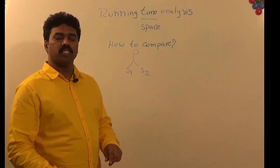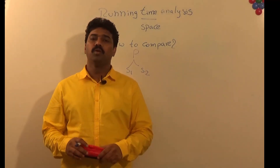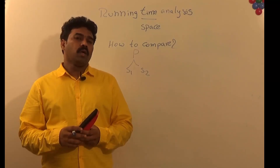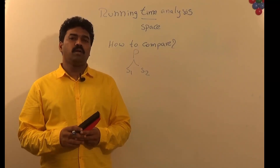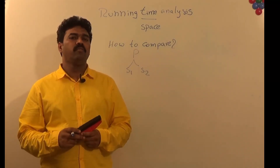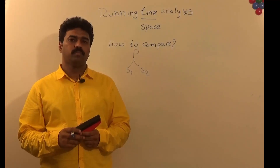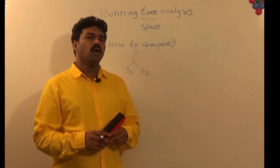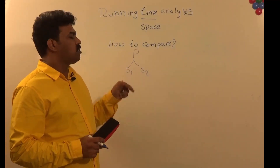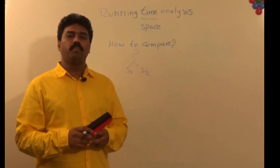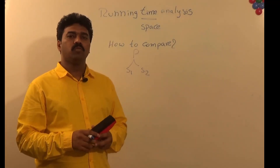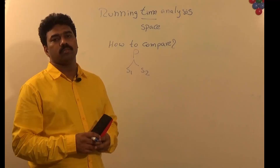Now, how do we compare S1 and S2 to see which one is better? Comparison is nothing but comparing the behaviors of the solutions S1 and S2. Based on what can we say which one is better? Can we think about all the parameters or properties we can use to compare these solutions?